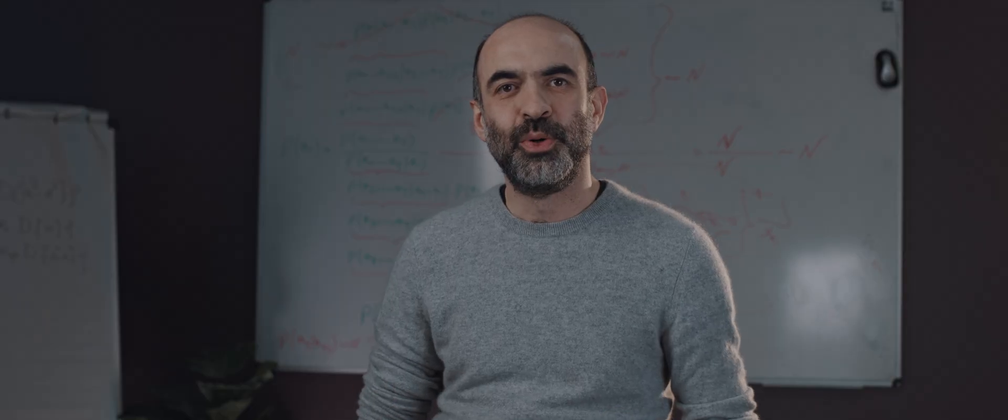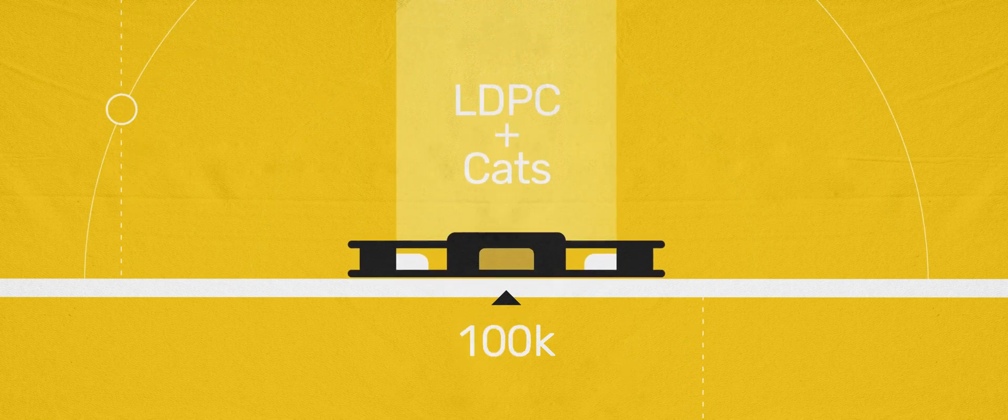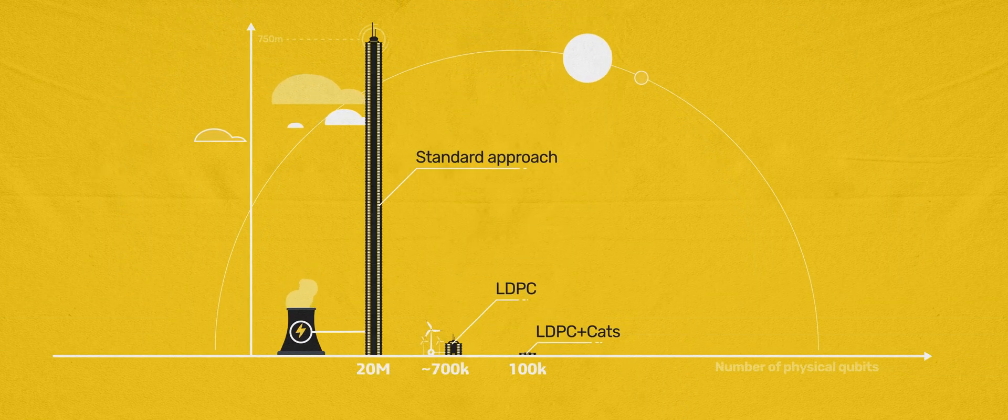Cat qubits alone are already quite efficient in reducing the hardware requirements to build a useful quantum computer. But combined with LDPC codes, the savings are drastic.